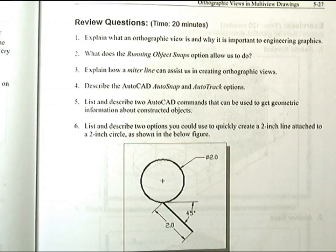With object snap tracking, the cursor can track along alignment paths based on other object snap points when specifying points in a command. To use object snap tracking, one or more object snaps must be switched on. The basic rules of using the object snap tracking option are as follows: